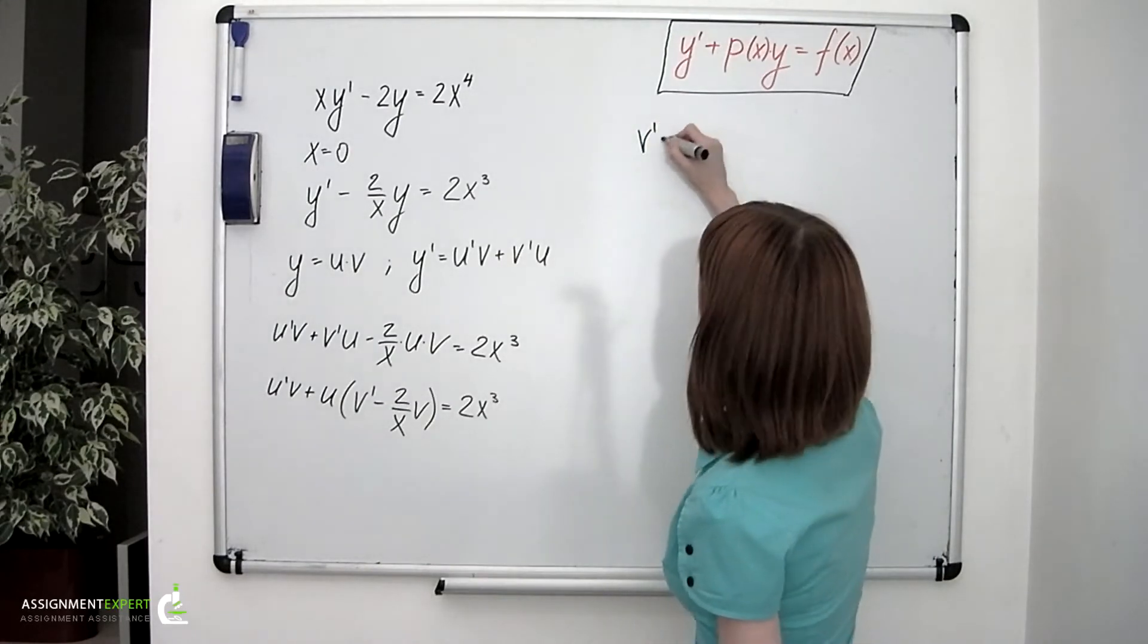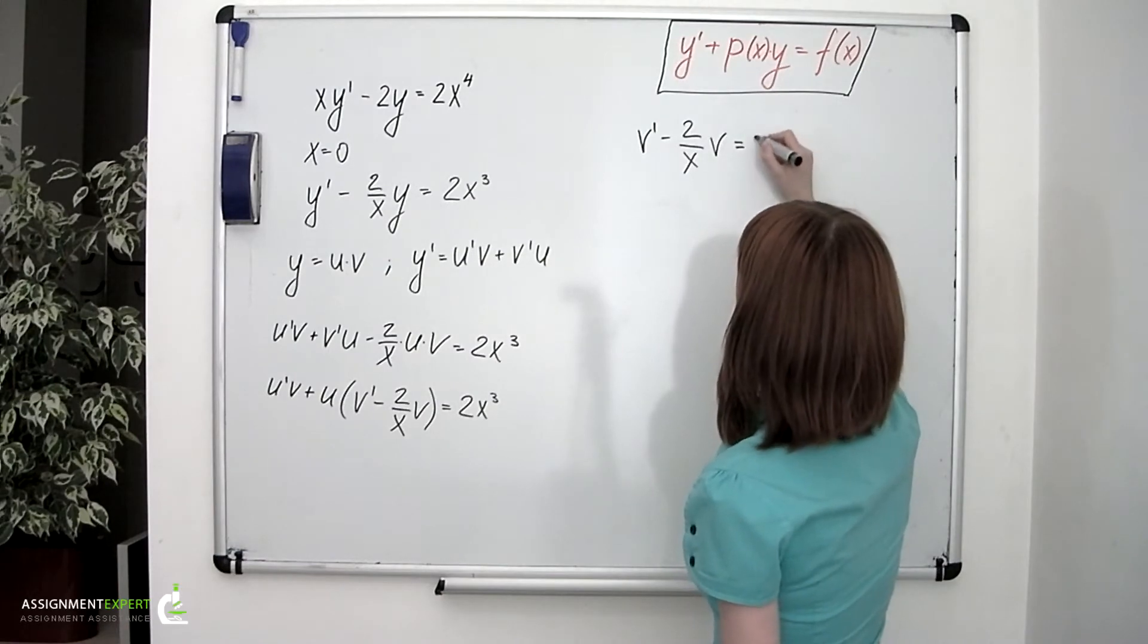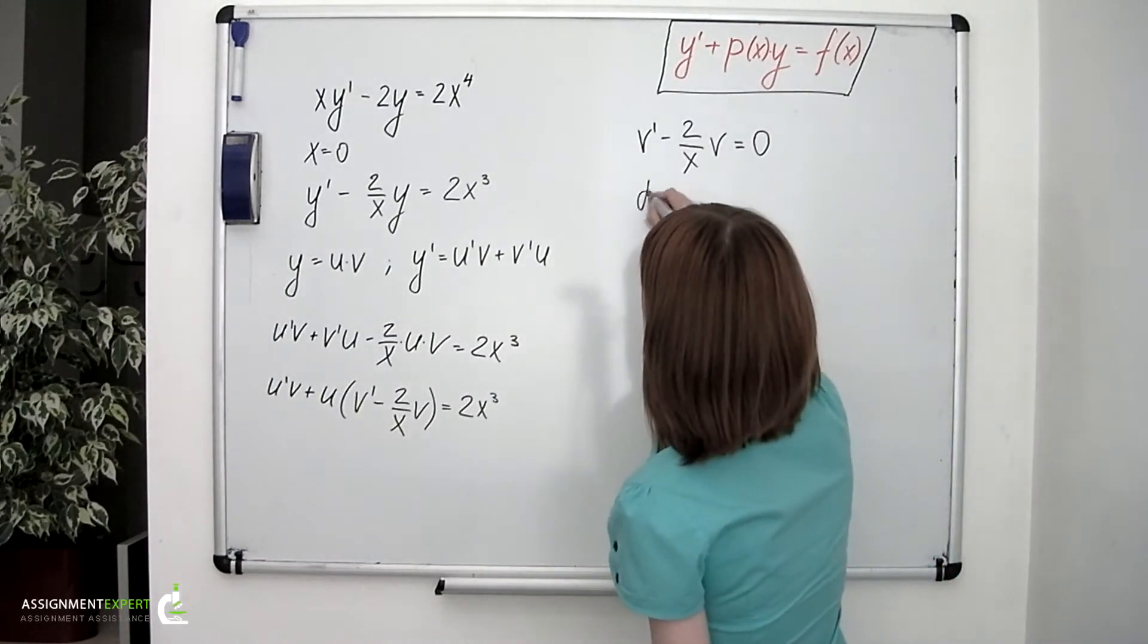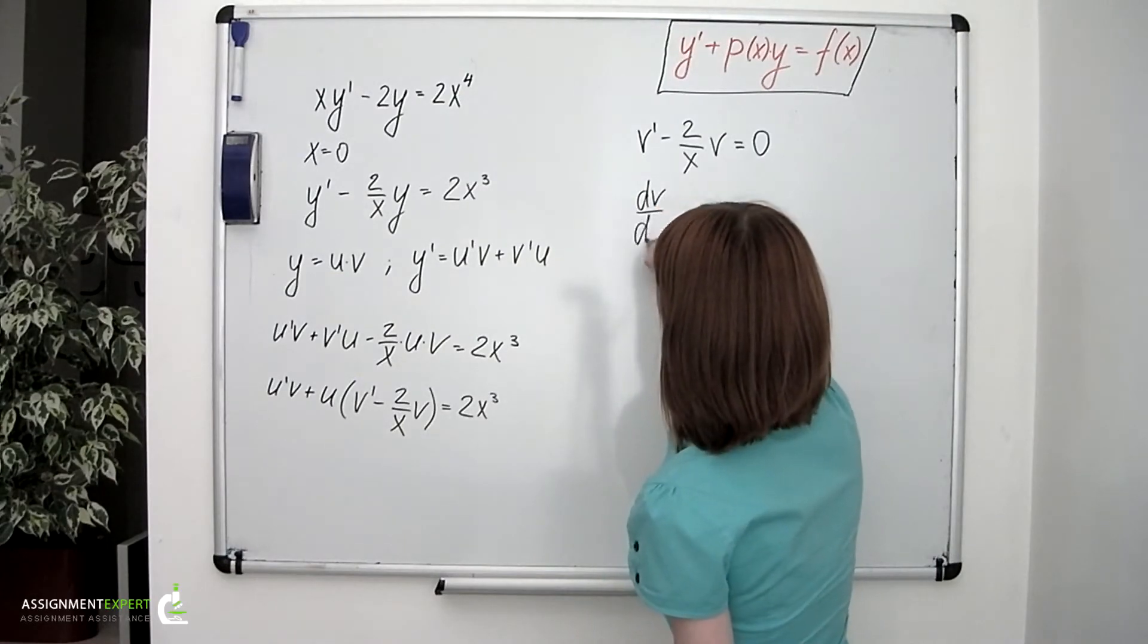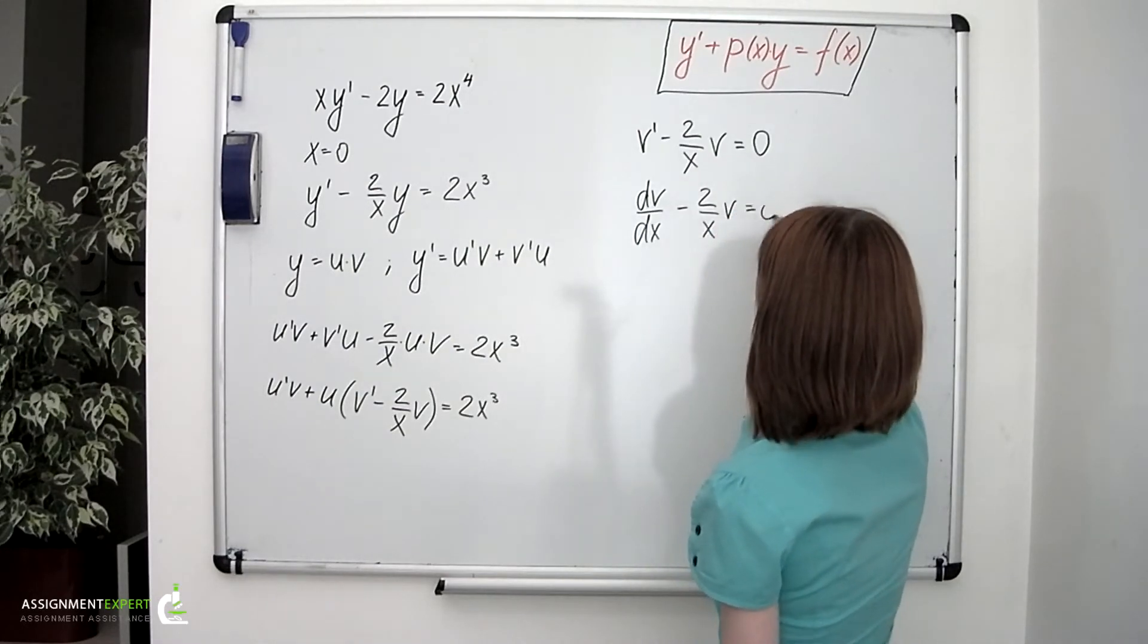v prime minus 2 over x times v equals 0. Or we can also write it as dv over dx minus 2 over x times v equals 0.